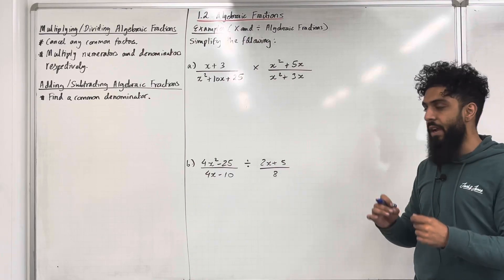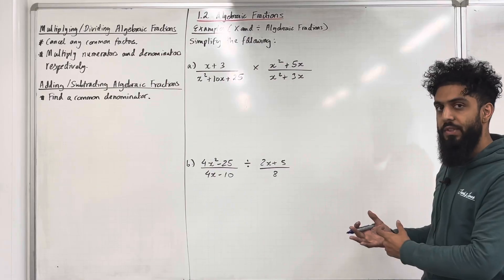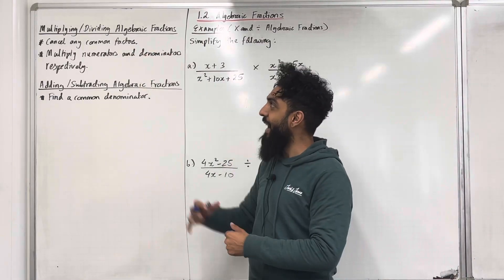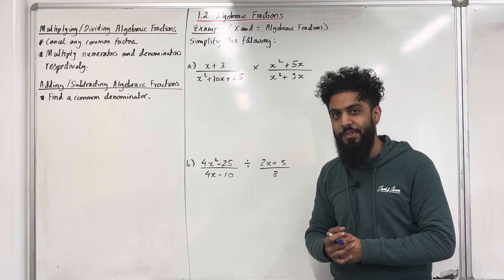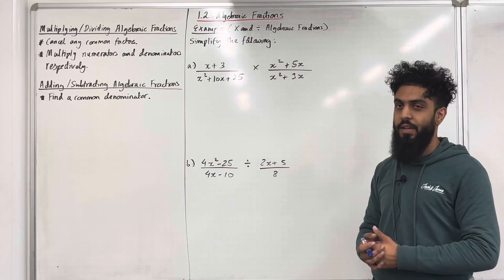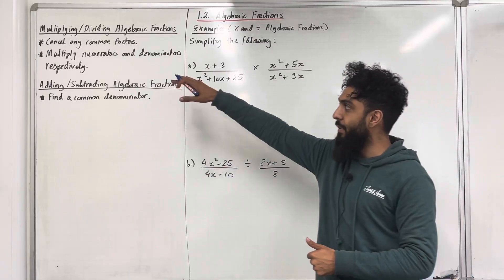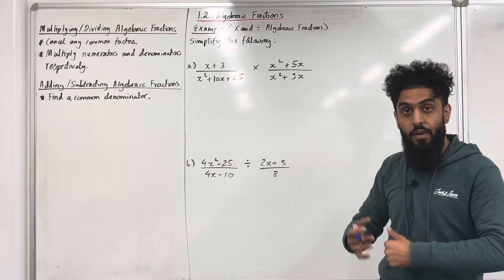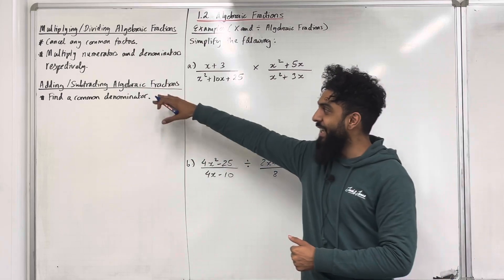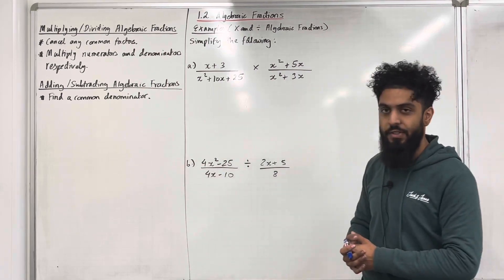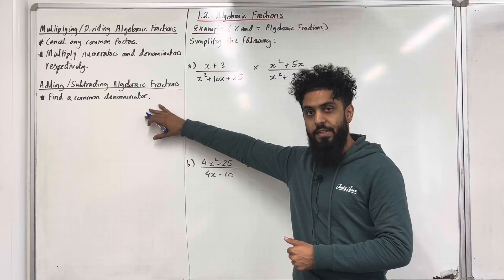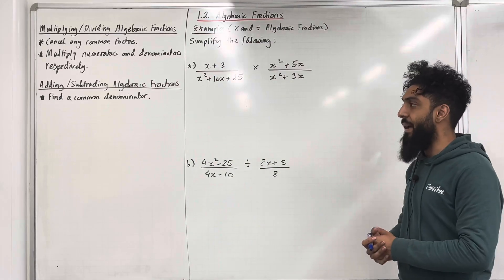Before I go ahead with these examples, I need to go through some basic facts. For multiplying and dividing algebraic fractions: first, you need to cancel out any common factors; second, you're going to be multiplying the numerators and denominators respectively. Moving on to adding and subtracting algebraic fractions, the key thing to look out for is finding a common denominator.